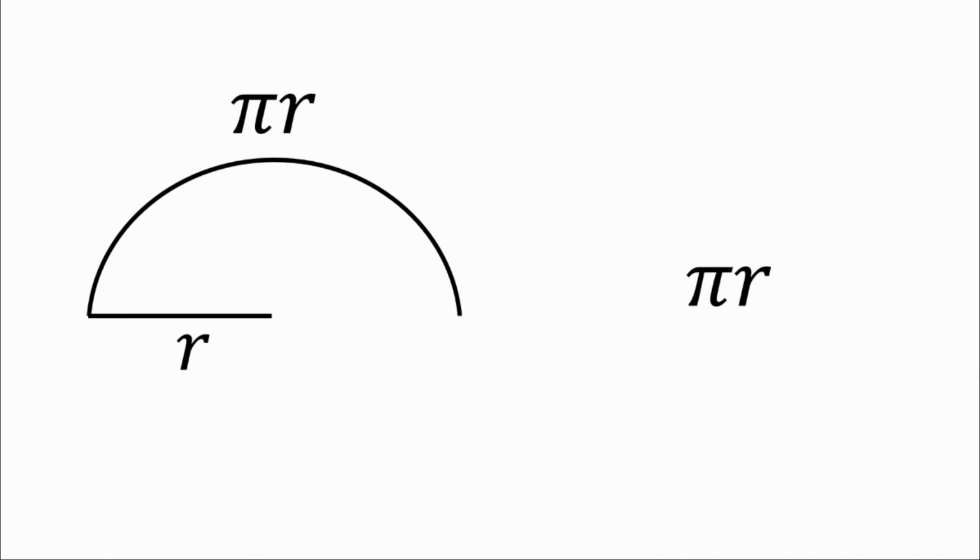So we'll have one radius here from the center to the edge of the circle and then we have another radius here and if we add those two together we've got two r's so we'll add 2r.